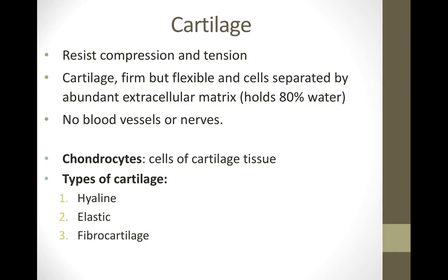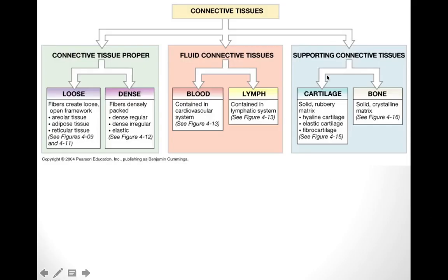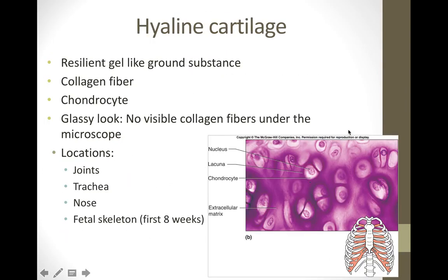The last category of connective tissue is supportive connective tissue, which provides support for the body and is broken down into cartilage and bone. Cartilage itself is broken down into three categories: hyaline, elastic, and fibrocartilage.